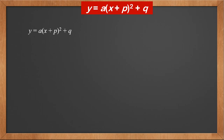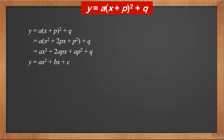We learned the properties of the graph of y equals a(x + p)² + q. Let's open it up. The square becomes x² + 2px + p². Multiplying by a, we get ax² + 2apx + ap² + q. Comparing with the general form y = ax² + bx + c, we find that b equals 2ap and c equals ap² + q.